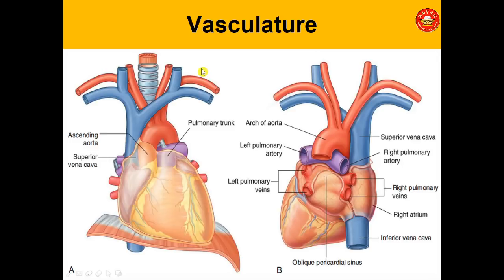Regarding vasculature in the middle mediastinum: we have the pulmonary trunk, the ascending aorta, the superior vena cava, part of the inferior vena cava posteriorly, and the left and right pulmonary veins.